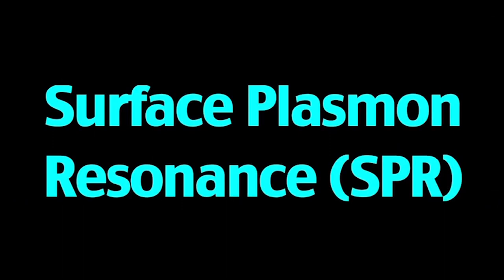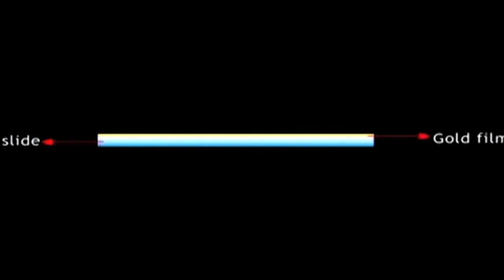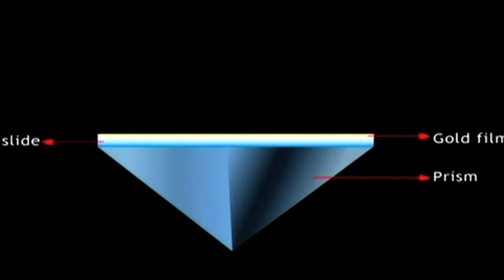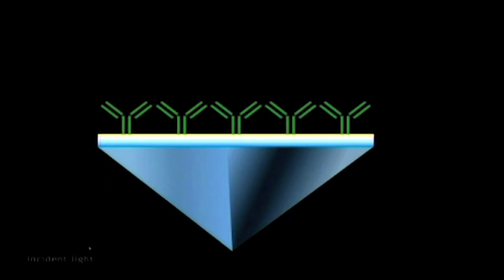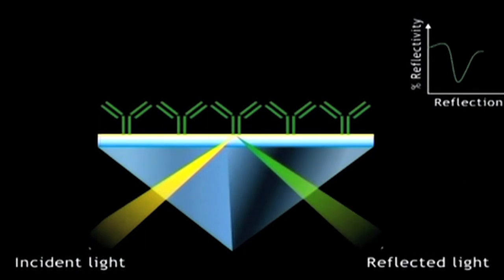Surface Plasmon Resonance. SPR is a highly sensitive spectroscopic tool that is increasingly being used for label-free detection studies. Test proteins, such as antibodies, are immobilized onto the gold-coated glass array surface. The incident light striking the surface is constantly reflected at a particular angle in this state. In the animation, we can see the gold film on top of glass, a prism, and the test antibodies immobilized on the gold surface. The incident light strikes the surface and is constantly reflected at a particular angle.